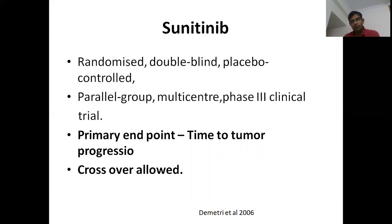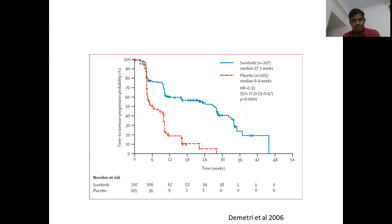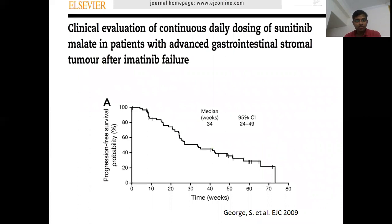The next drug approved after imatinib was sunitinib, studied in the second-line setting in a placebo-controlled phase 3 parallel-group trial. The primary endpoint was time to progression. Sunitinib arm achieved 27 weeks versus 6 weeks in placebo, with a hazard ratio of 0.33. The trial dose was 50 mg once daily for 4 weeks followed by a 2-week gap — a difficult schedule, especially for elderly or comorbid patients. A phase 2 trial of continuous daily dosing at 37.5 mg was found better tolerated, with a median event-free survival of 34 weeks.